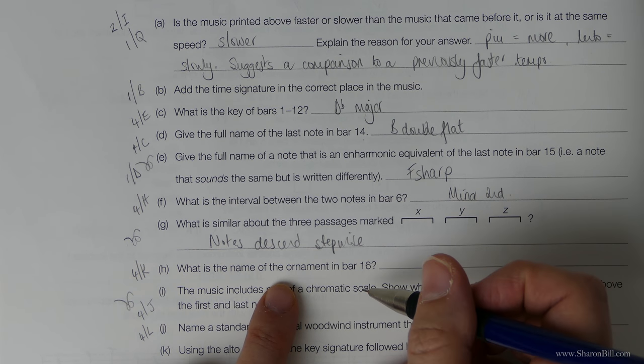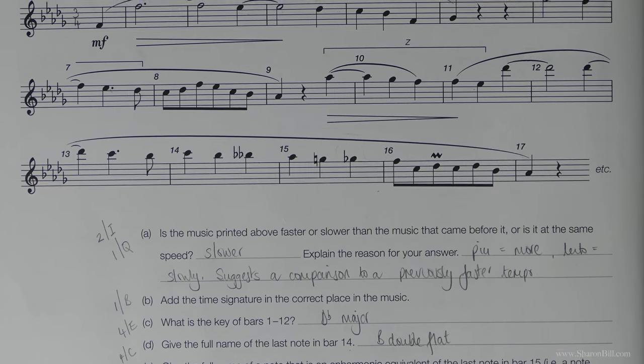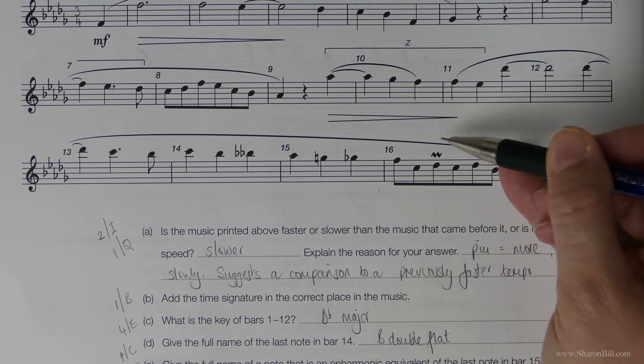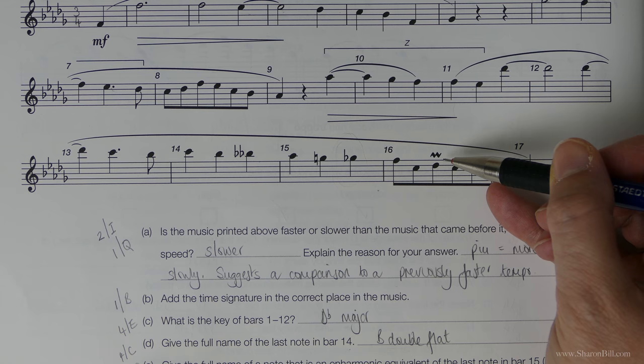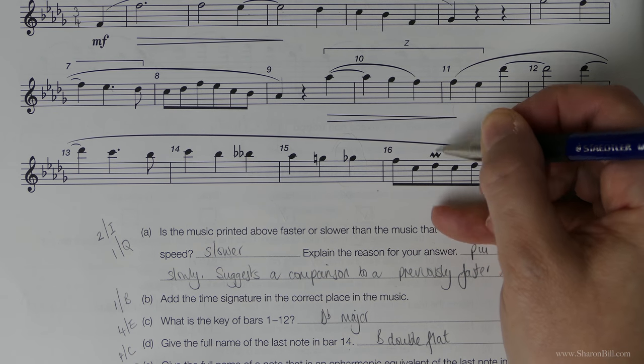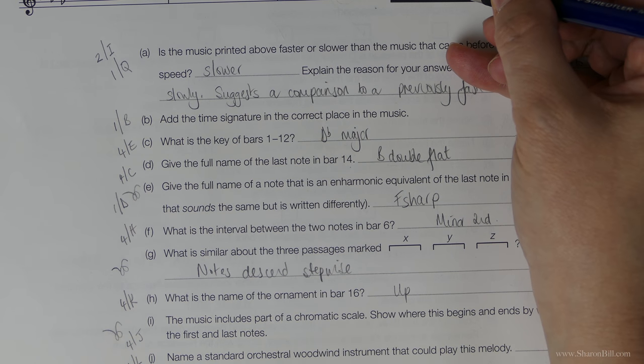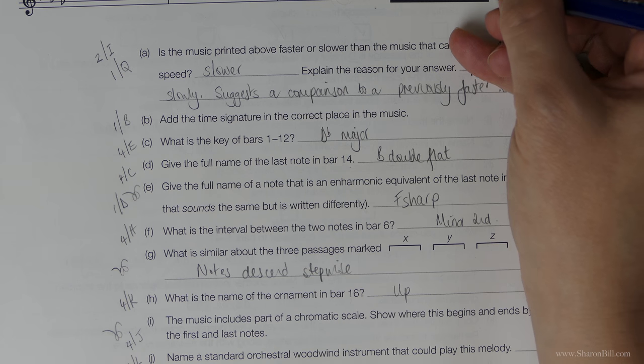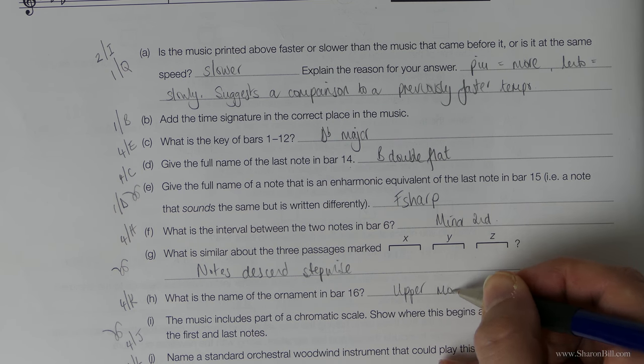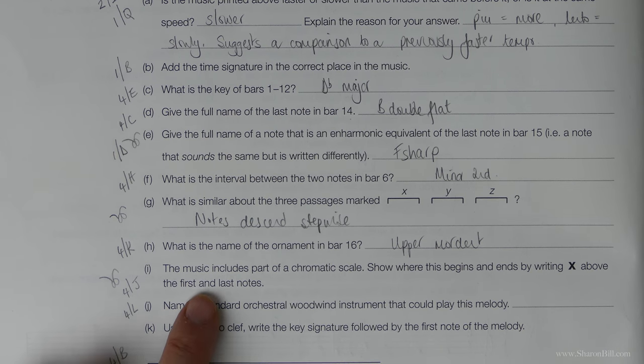Here we go then. What's the name of the ornament in bar 16? So here we go. This one here. It's a mordent, but we need to be a bit more specific than that. We need to say if it's upper or lower. The lower mordent has a line through it. This is the upper mordent, where we just play that note, upper note back again quickly. It's the upper mordent. There we go.